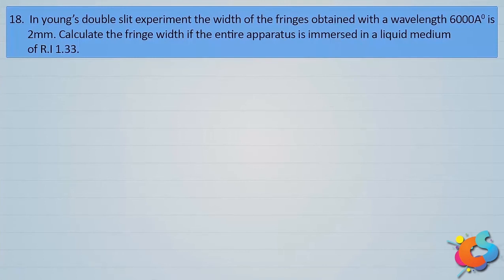Next question: In a Young's double slit experiment, the width of fringes obtained with wavelength 6000 Å is 2 millimeters. Calculate the fringe width if the entire apparatus is immersed in a liquid medium of refractive index 1.33. Initially the experiment was in air with fringe width 2 mm; now the apparatus is immersed in liquid.